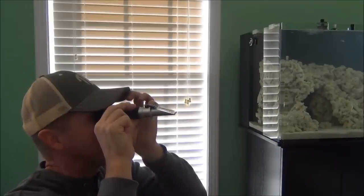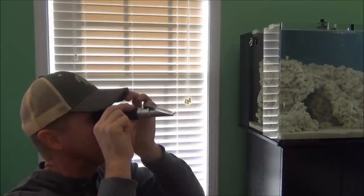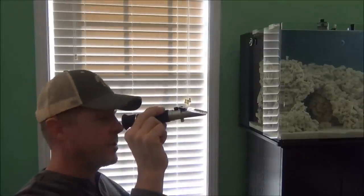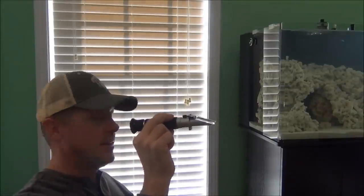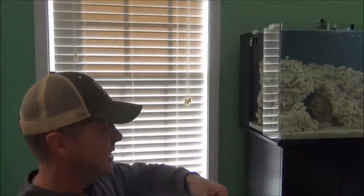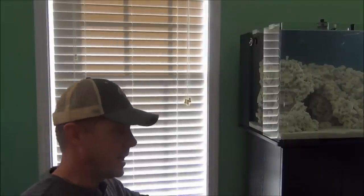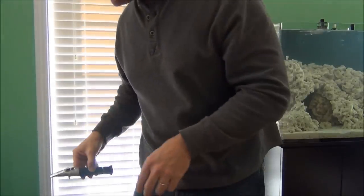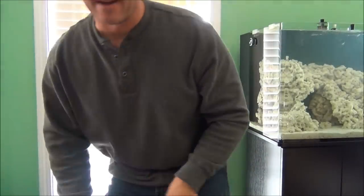And right now I have a salinity of 35 parts per thousand, a specific gravity of 1.026. Boy, I got lucky. That was just adding 14 cups of the salinity by Aqua Vitro. Boy, that's luck. I didn't have to do any adjustments. But we're going to talk about how to adjust the salinity in your aquarium if you're off.